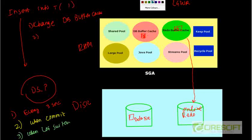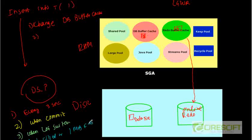The fourth condition is when the redo buffer cache is one-third full or one MB full, whichever comes first. So under these four circumstances, whichever condition comes first — on that time, log writer is going to write from the redo buffer cache to the online redo log.